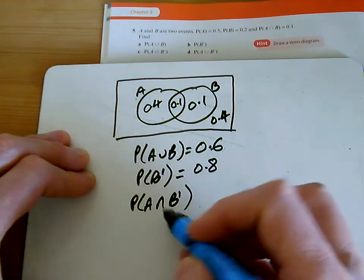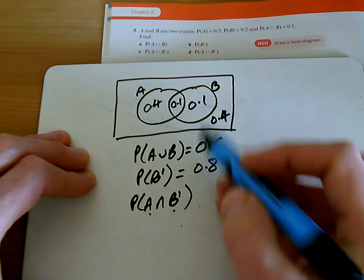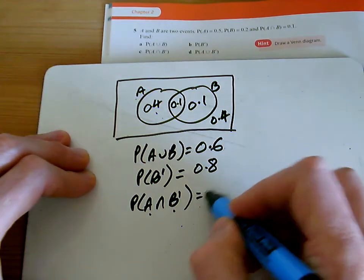So what does this one mean? It has to be in A, but it won't be in B. So it's just this bit here, the 0.4 there.